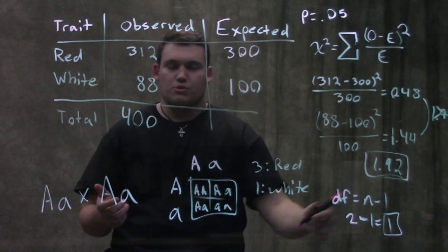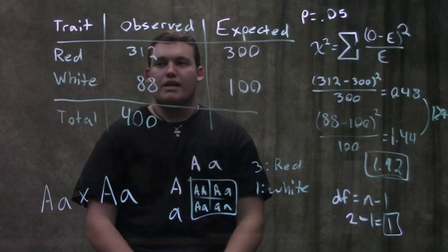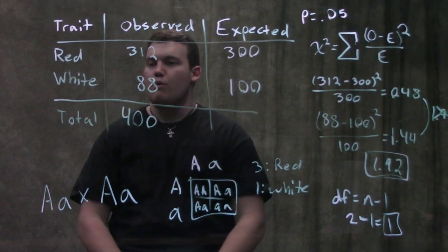All right, well, beautiful, that's where our 1.92 should be between. And let's say that was 0.01 and 0.05.